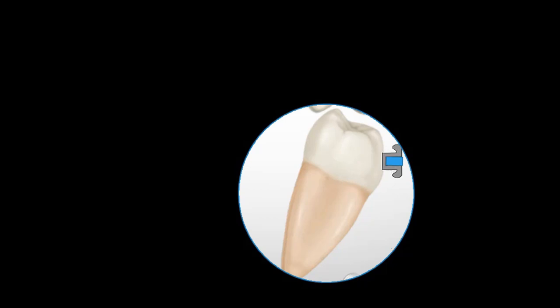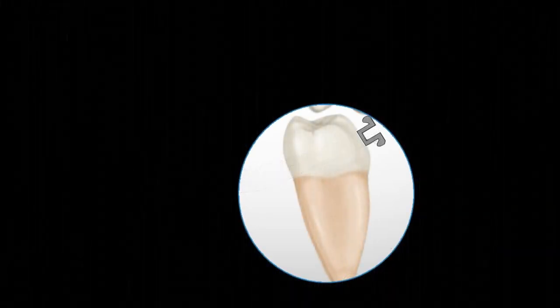So what was the solution when you were using standard edgewise brackets? The solution was to give torque or twist in the rectangular heavy wire which you are giving at the finishing stage of treatment. Now just assume that you have given minus 30 degree torque in the wire segment which will go into this molar, and because of that twist, the wire will not apply any force and it will not change the torque value of this tooth.